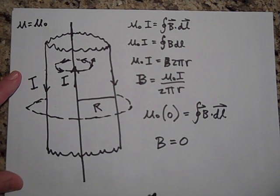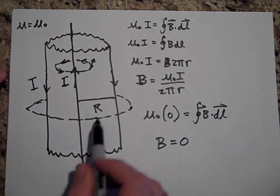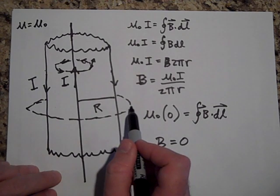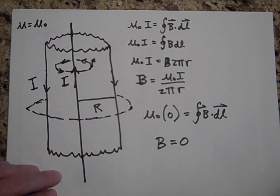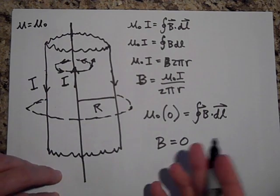And so the point is that the B out here is going to be zero. And so what that means is that when you use a coaxial cable, you don't have to worry about, even though you have all this current running through here, you don't have to worry about it making magnetic fields outside of it. The magnetic field outside of a coaxial cable a lot of times is zero.